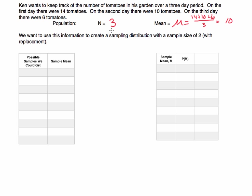We're going to see what happens when we create a sampling distribution. A sampling distribution is a distribution of all the possible sample means for all the possible samples. Because we're dealing with a small number of observations in the population, we can actually write out all the possible samples — we're talking about a sample size of two, randomly selecting two observations with replacement.